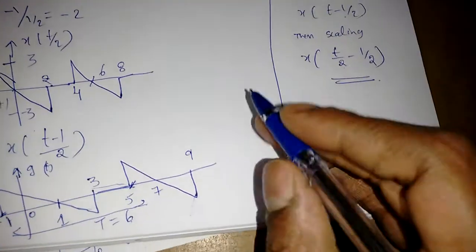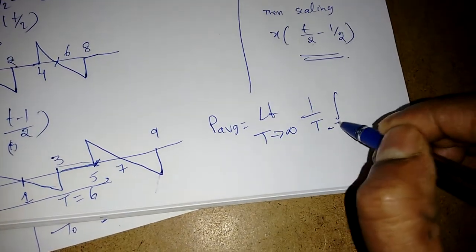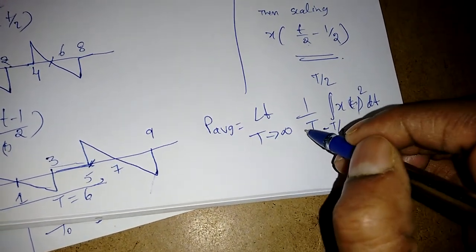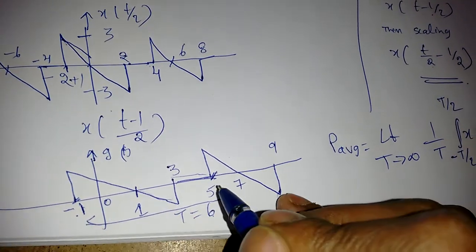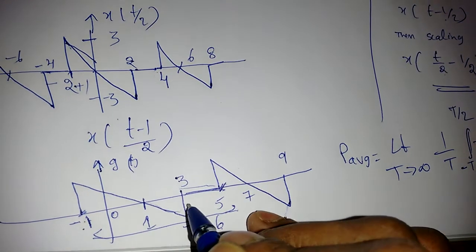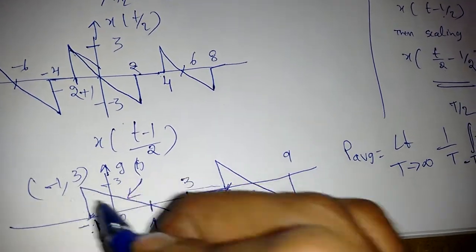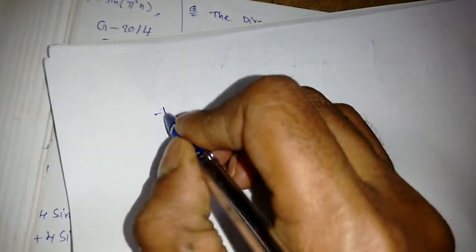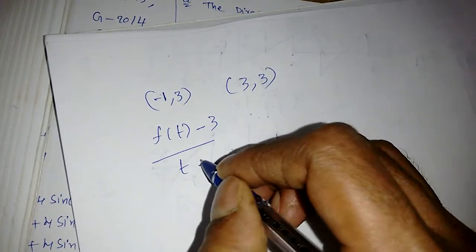To find the average power, we use the formula: P = (1/T) integral over one period of |x(t)|^2 dt. The time period T equals 6. We integrate from minus 1 to 5, but from 3 to 5 the signal is zero, so we only integrate from minus 1 to 3. The signal goes from point (minus 1, 3) to point (3, 3) — wait, we need the equation between (minus 1, 3) and (3, minus 3).